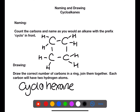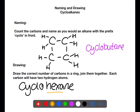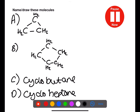When naming cycloalkanes, simply count the number of carbons in the structure and name it as you would an alkane, then put the prefix cyclo- in front. Here we have four carbons, so this is cyclobutane. When drawing a cycloalkane, find how many carbons you have, draw them in a ring and join them together. Each of the carbons will have two hydrogens, so add these in. Pause the video now and name and draw these molecules.